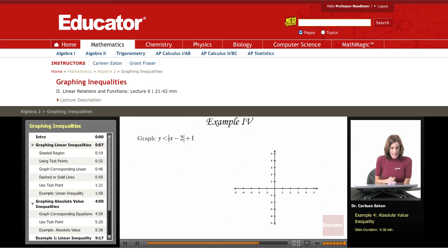Where y is less than the absolute value of x minus 2 plus 1. Starting out with just thinking that I expect this to look like a V because absolute value graphs are V-shaped.